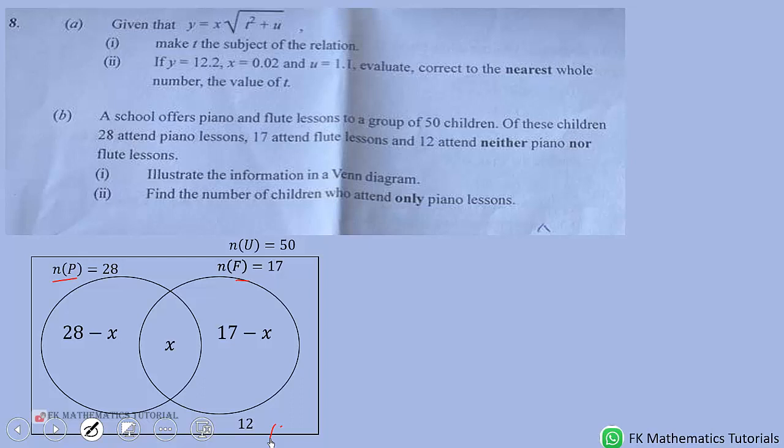Now, we don't know the number of both. We present it with x. Then, this will be only piano, 28 minus x.